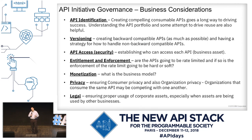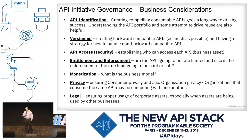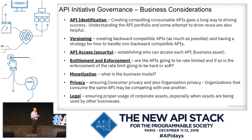From a governance perspective there are business considerations and technical considerations. API identification is one of the critical success factors — if you have good APIs, you will be successful; if you have hard-to-use APIs, you're in trouble. Versioning, entitlement, enforcement, security, privacy, monetization, and legal are all important. Legal should be involved as well — especially if you're supplying your assets outside the company to partners or third parties, you want to make sure you're protected.